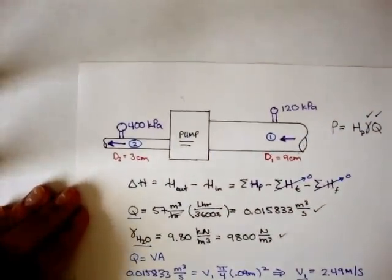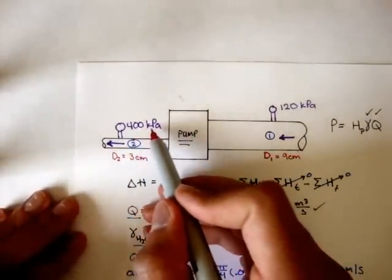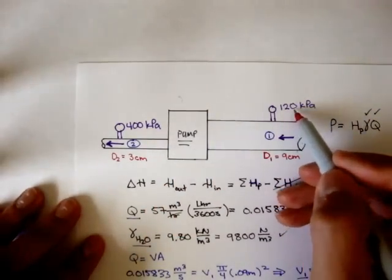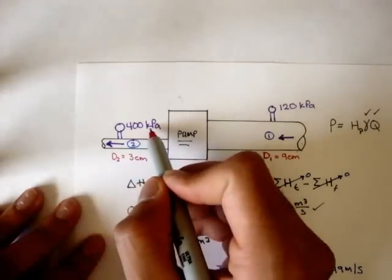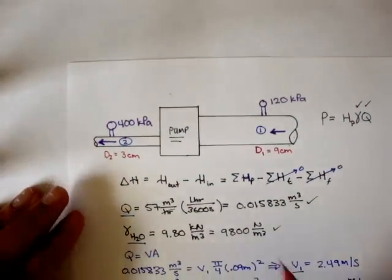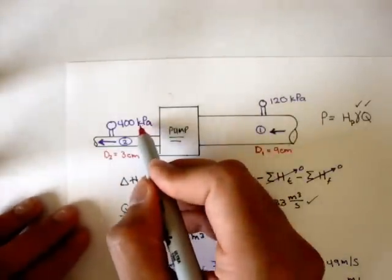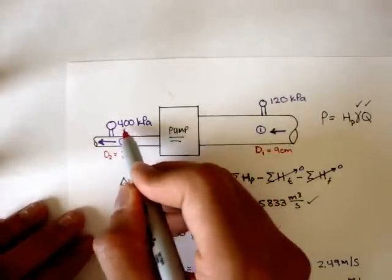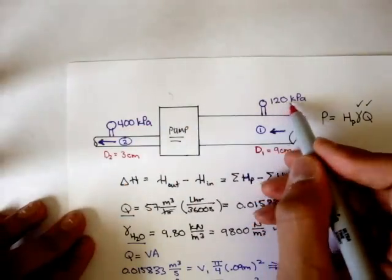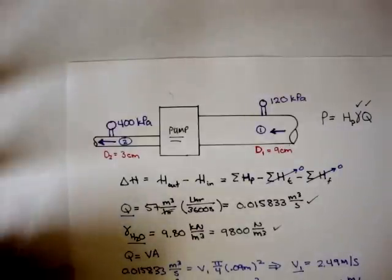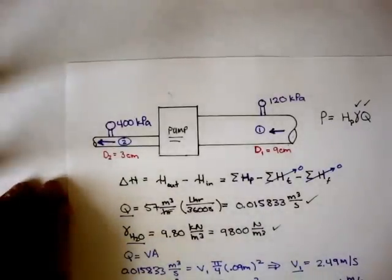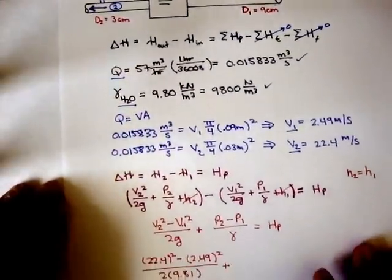Then plus the pressure at 2 minus the pressure at 1. We have pressures in terms of kilopascals: 120 kilopascals and 400 kilopascals. We can change kilopascals to pascals by multiplying by 1000.